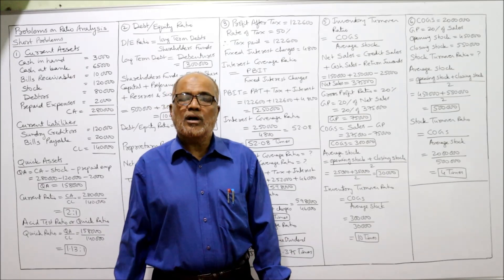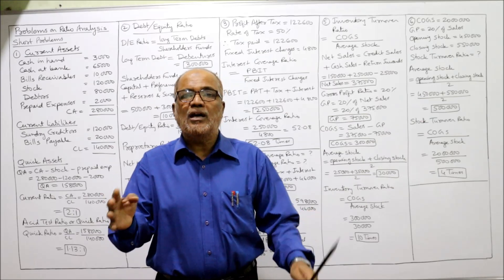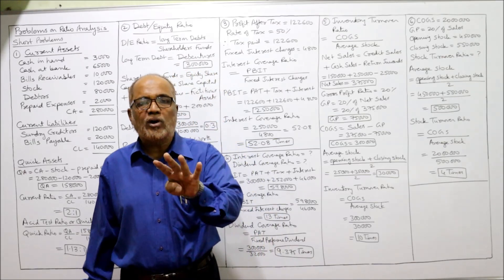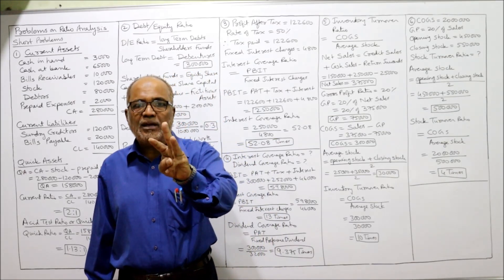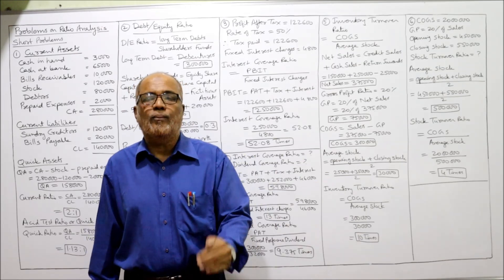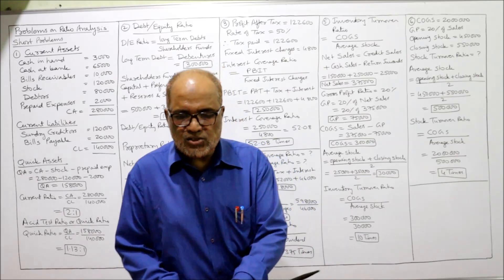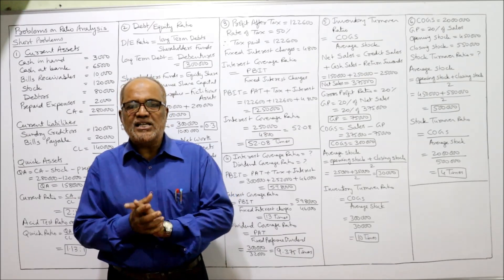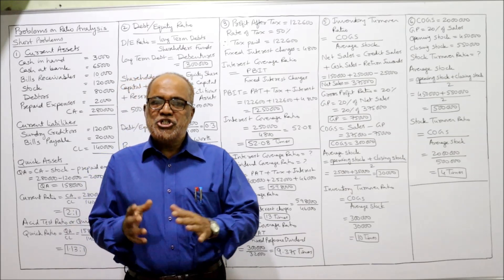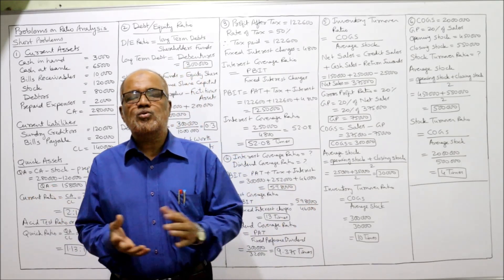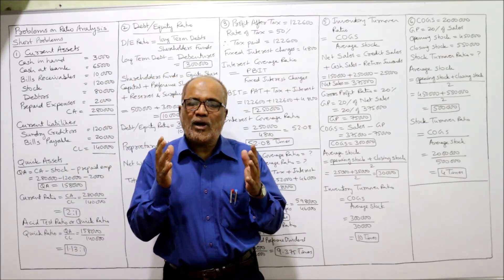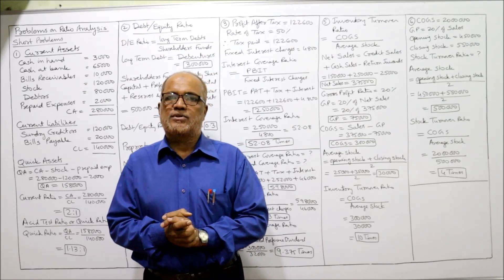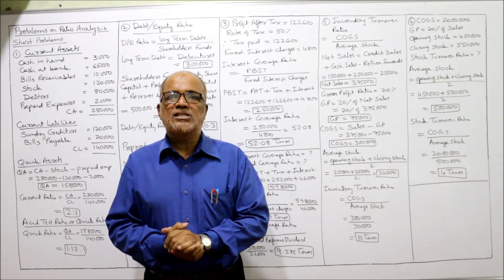A stock turnover of 4 times is very low compared to the previous problem's 10 times. In one year, the stock can only be converted to sales 4 times — that is, every 3 months — which is very slow. In this video, I have completed 6 problems on ratio analysis. If you are satisfied, please like, share, and subscribe to the channel. We'll continue with more problems in the next video.